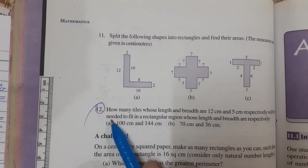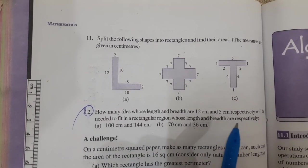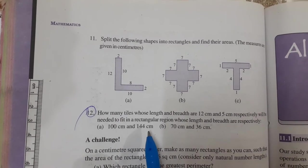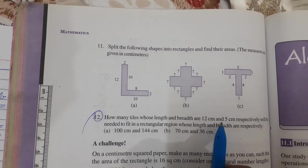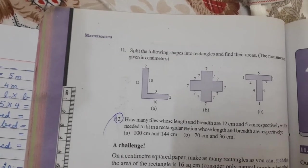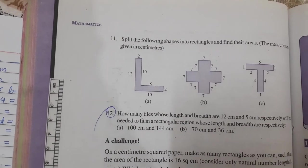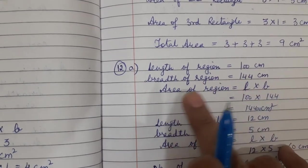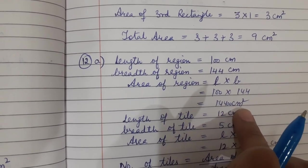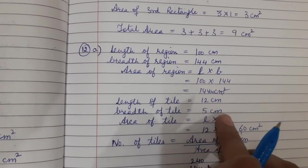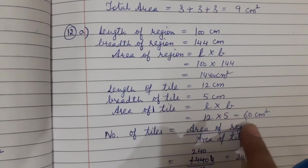Question 11 you will do yourself. Question 12: How many tiles, whose length and breadth are 12 cm and 5 cm respectively, will be needed to fit in a rectangular region whose length and breadth are 100 cm and 144 cm? Length of region is 100 cm, breadth is 144 cm. Area of region is length into breadth = 14400 cm square. Length of one tile is 12 cm, breadth is 5 cm. Area of one tile is 12 × 5 = 60 cm square.